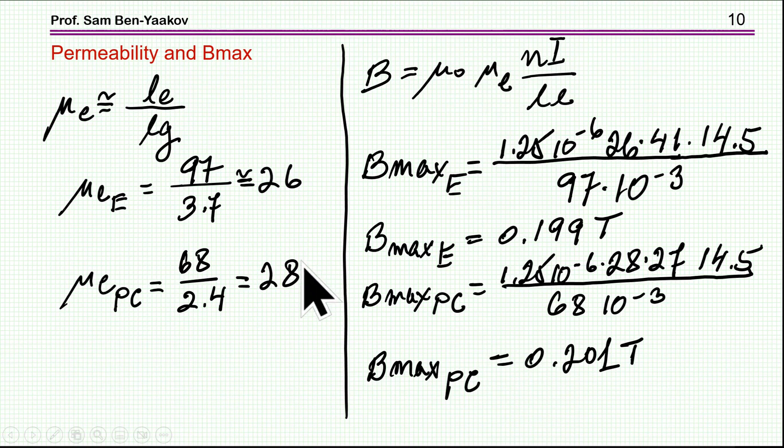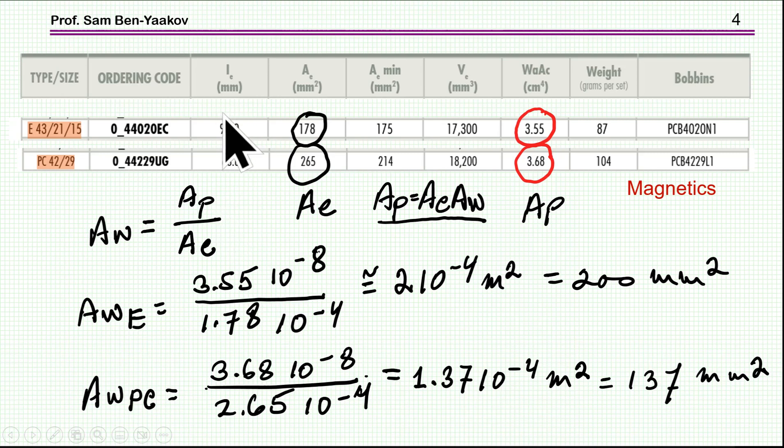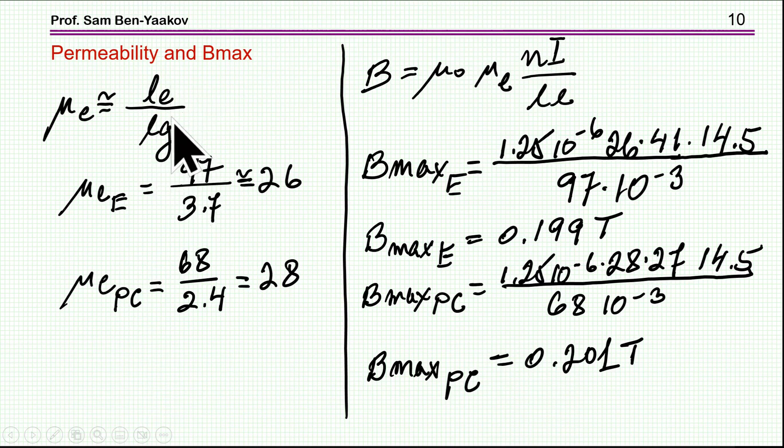Let's have a look now at some other aspect of these two designs. We know that the relative permeability is the magnetic path length over the gap length. We have the magnetic path length from the datasheet. For the E core, it's 97 millimeter, and for the pot core, it's 68 millimeters, approximately. So, plugging in the magnetic path length and the gap length that we have already calculated, we find that the relative permeability for the E core is 26, and for the pot core is 28, pretty much close one to the other.